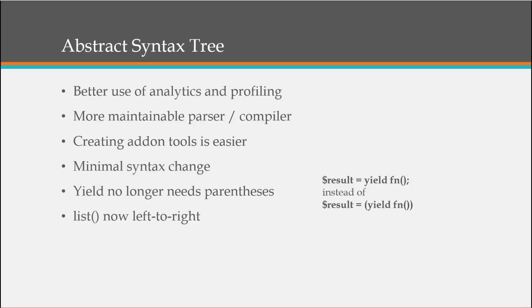We also have the implementation of the Abstract Syntax Tree. This allows for better use of analytics and profiling, and a more maintainable parser and compiler. Creating add-on tools will be easier using AST. There are minimal syntax changes: yield no longer needs parentheses — we used to have to have parentheses around the yield, but now we don't. And the list function, which was right-to-left, is now left-to-right and a little easier to work with.